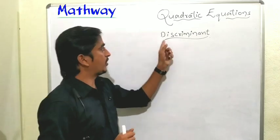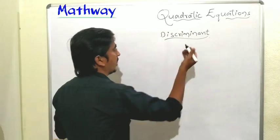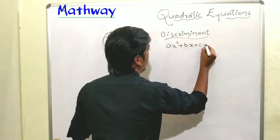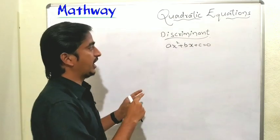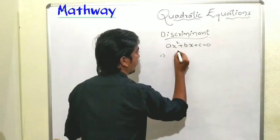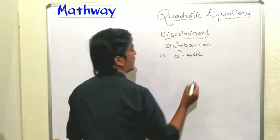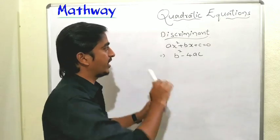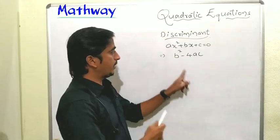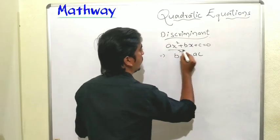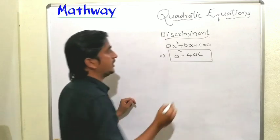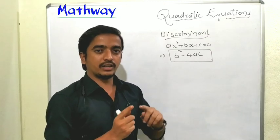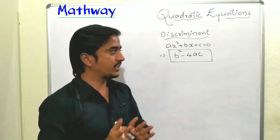Next, the discriminant of a quadratic equation. For the quadratic equation ax² + bx + c = 0, the discriminant is defined as b² - 4ac. Using the discriminant, we can determine the nature of the roots — whether they are real roots, imaginary roots, or equal roots.